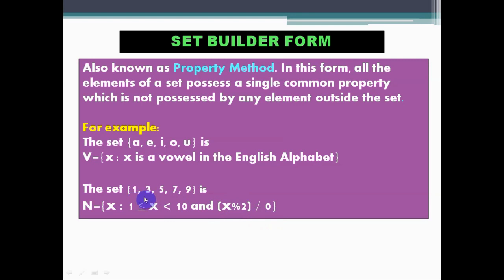It means that all these elements have a common property that they are greater than or equal to 1 and also smaller than 10. When they are divided by 2, the remainder will be not equal to 0. So all these elements follow this common property, so we can write it in set builder form this way. I hope it is clear how we can write a set in tabular form or in set builder form. Now let's go for the next.